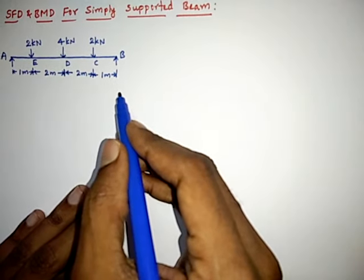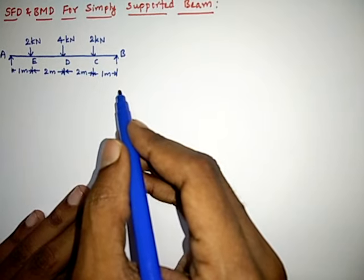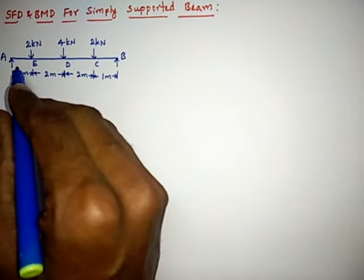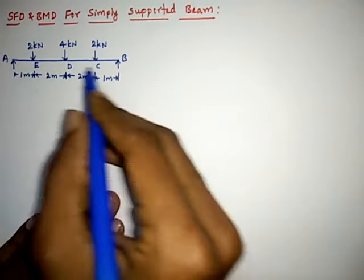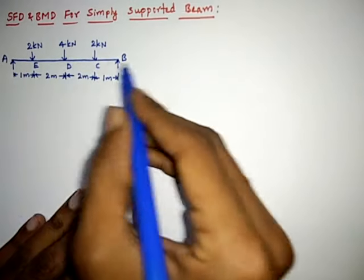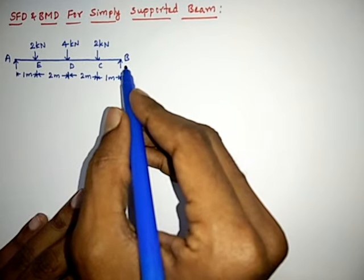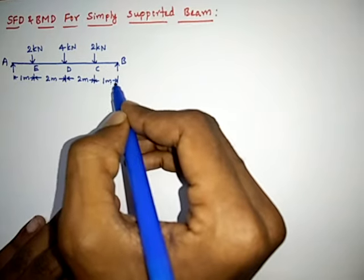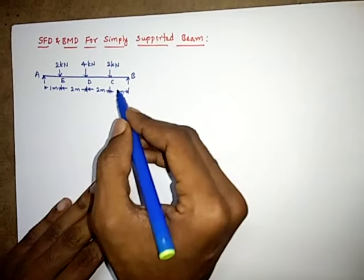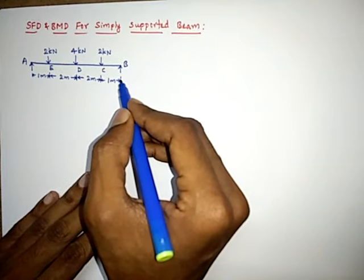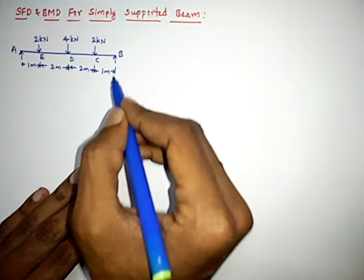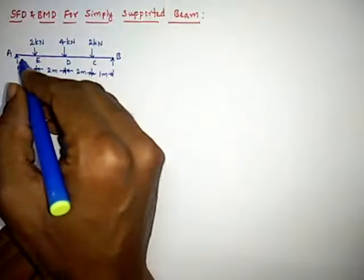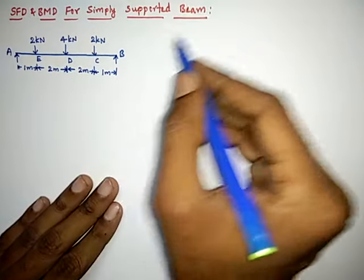To draw shear force and bending moment diagrams for any simply supported beam, we first have to calculate the reaction forces. This beam is kept on supports A and B, and because of the applied loads, we get reaction forces at A and B.